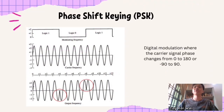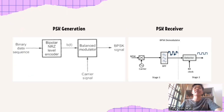Phase Shift Keying (PSK) is a digital modulation where the carrier signal phase changes from 0 degrees to 180 degrees, or from 0 degrees to 90 degrees. Whenever there is a logic change from 1 to 0 or 0 to 1, there is a phase change. To generate a PSK signal, an input signal is converted from unipolar to bipolar using a level converter. Then a balanced modulator combines the bipolar input signal and the carrier signal into a PSK signal. To receive a PSK signal, it is multiplied with a carrier signal and passed through a bandpass filter; the detector then converts it back to the original signal.